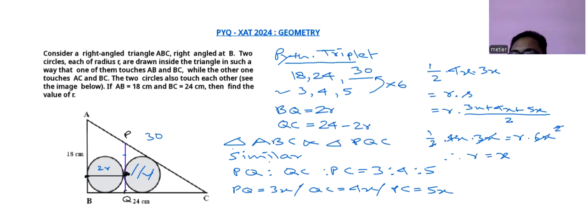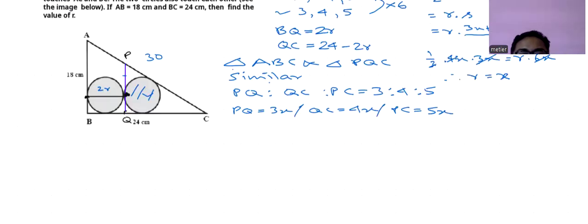In this figure what you are getting, QC is 4x, and here we have QC is 24 minus 2r. So what we can write down here: 24 minus 2r, that is QC, will be equals to 4x. And here we are getting r equal to x, so we can substitute here, so it will be coming as 4r. So what we are getting, 6r equals to 24.